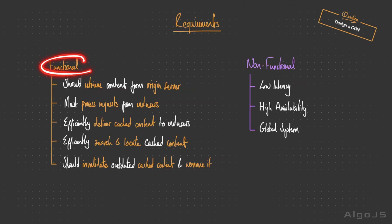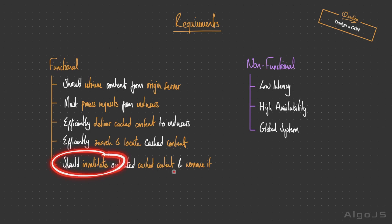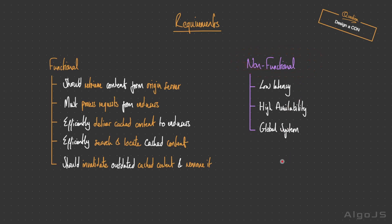Let's briefly discuss our functional and non-functional requirements. The CDN should retrieve content from the origin server, process requests from end users, efficiently deliver cached content, search and locate cached content, and invalidate outdated cached content — essentially carrying out CRUD operations. For non-functional requirements, we need a global distributed system with low latency for end users, since that's the whole point of a CDN, and it needs to be highly available.